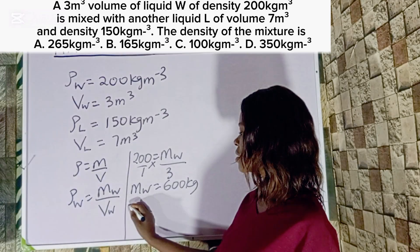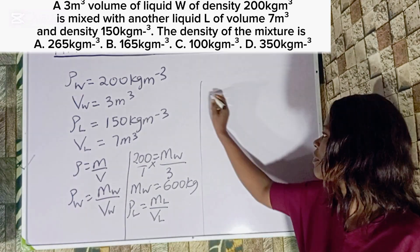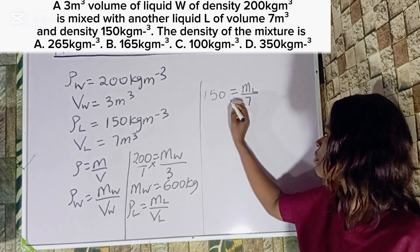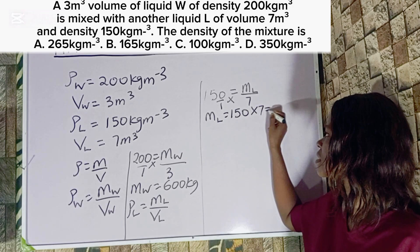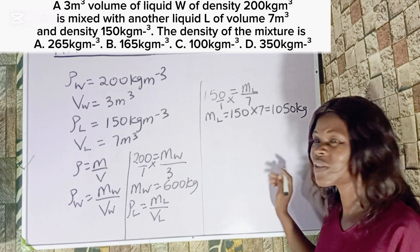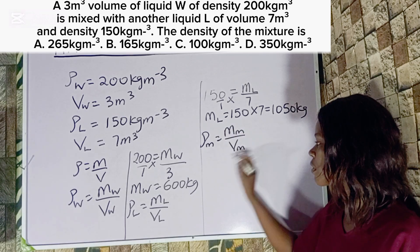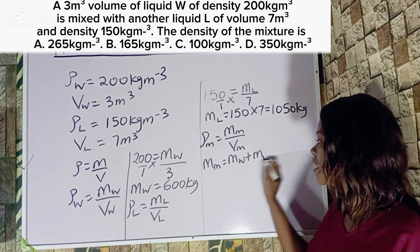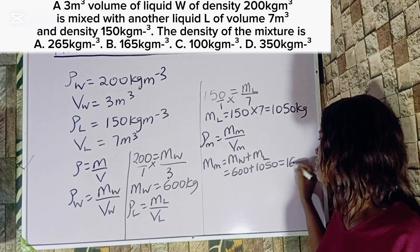Similarly, density of liquid L equals mass of L over volume of L. So 150 equals mass of L over 7. Cross multiplying, mass of liquid L equals 150 multiplied by 7, which gives us 1050 kg. For the density of the mixture: density of mixture equals mass of mixture over volume of mixture. Mass of mixture equals mass of W plus mass of L, which is 600 plus 1050, giving us 1650 kg.